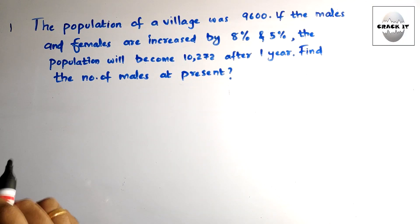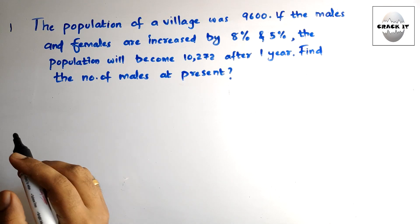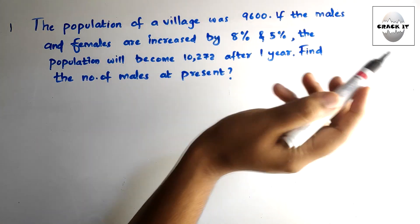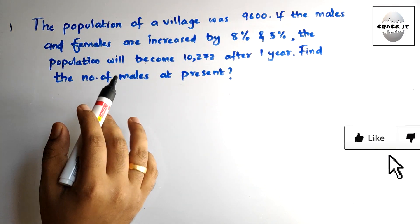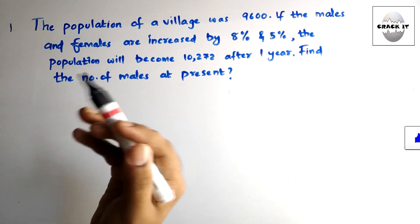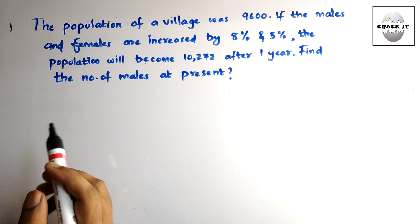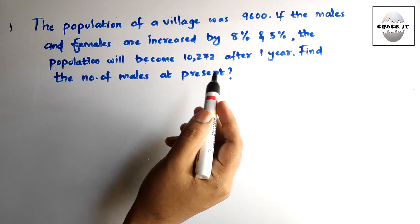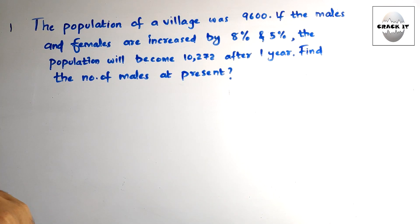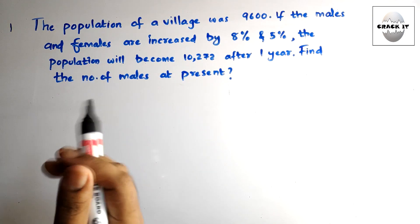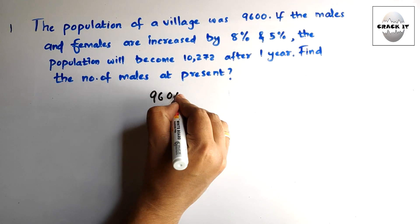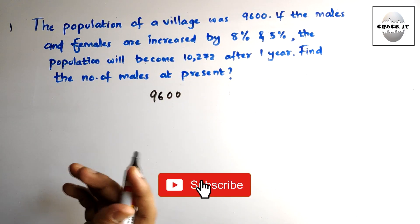The second question: the population of a village was 9600. If males and females are increased by 8% and 5% respectively, the population will become 10,272 after one year. Find the number of males at present. For solving this using our easy method, first we take the given things: 9600 is the present population.